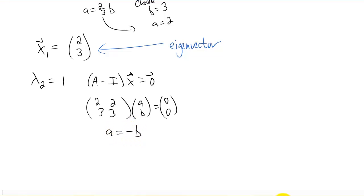So you can decide to choose, say, maybe b equals 1 or something like that, or a equals 1, or whatever you really like. And you'll get an eigenvector that is 1, negative 1, or you could also call it negative 1, 1. Either way is correct.